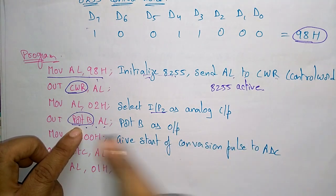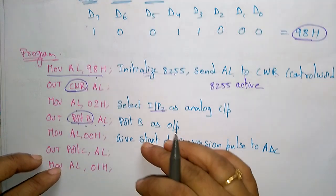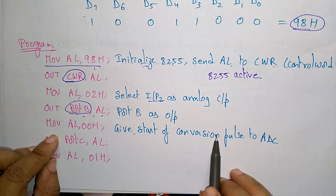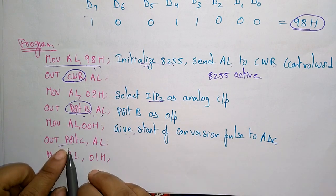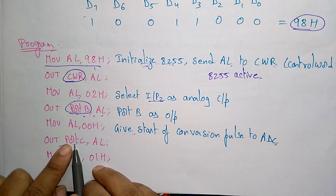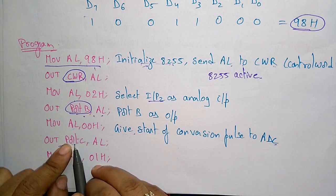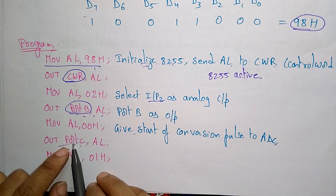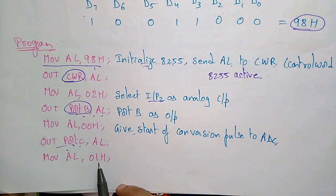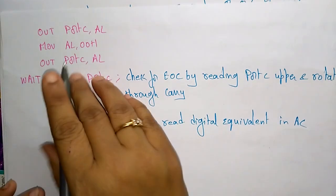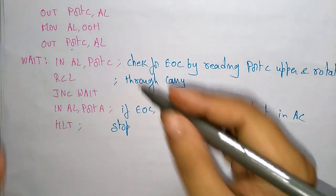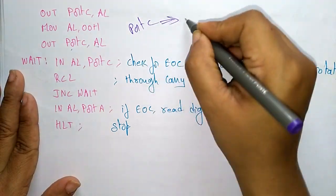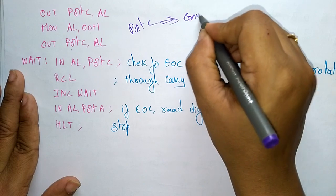Next, we give the start of conversion (SOC) pulse to the ADC by placing the value in port C. Port C upper acts as an input and port C lower acts as an output for start of conversion. First, 01H is moved to AL and placed in port C, then AL becomes 00H and again placed in port C. Port C is used to manage the conversion process.